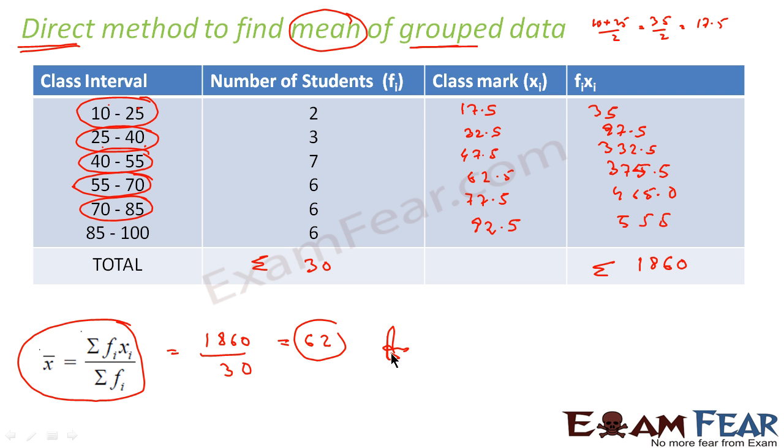You just find xi, and xi is nothing but the middle of the class interval: lower limit plus upper limit divided by 2. Then fi was given, I found fi xi, then I found summation of fi xi and summation of fi, and then use the formula. Mean is nothing but summation of fi xi by summation of fi, and I got the value as 62. That is my answer. Very simple, direct.